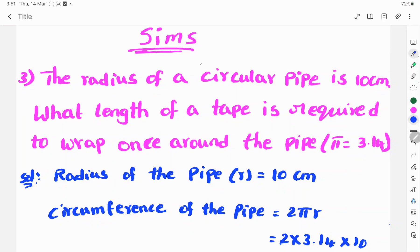Hi, welcome to Sims. Today's sum: The radius of a circular pipe is 10 centimeters. What length of a tape is required to wrap once around the pipe? Here we take pi value is 3.14.